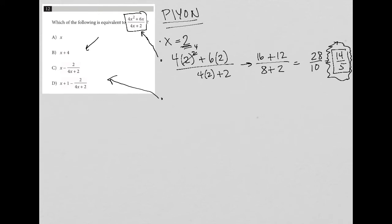So a is obviously wrong, because if I just replace x with 2, 2 does not equal 14 5ths. So a is out.